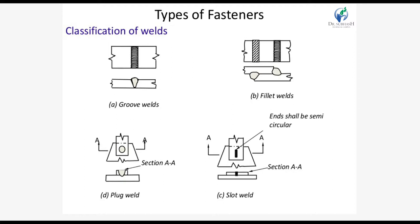The advantages of welding are: First, the welded connection eliminates the need for making holes in the member — therefore the effective section is not reduced, which is a great advantage in tension member design. Second, the structure has less weight compared to bolted connections. Third, the welding process is quick and saves construction time. Fourth, welded structures are more rigid compared to bolted joints.